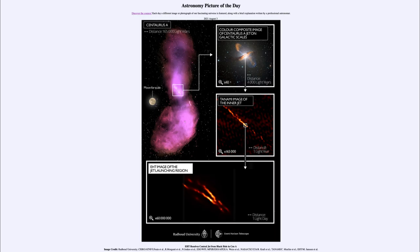When we zoom in down to the middle right, we see we're looking at the jet here, and we're going now 165,000 times more detail. So we're looking at distances on the scale of one light year, which is only a fraction of the distance between us and the nearest star.